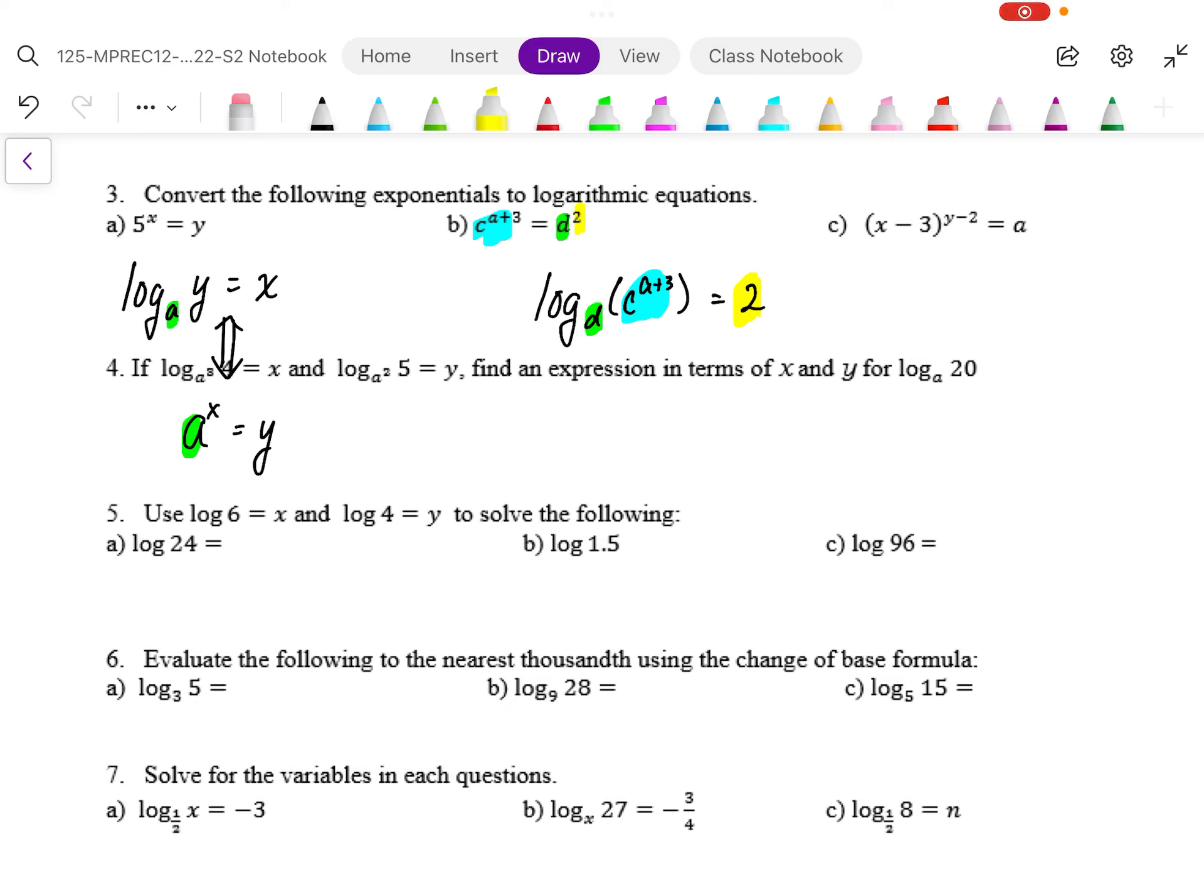An alternative, though, is we could use the c as a base. So I'll color code this. There's my argument. And there's my exponent. So I'm going to use this as my exponent and this as my argument.